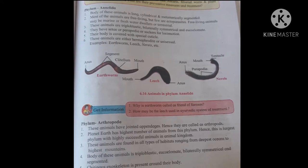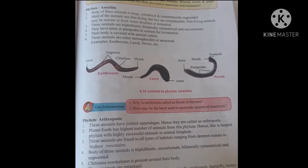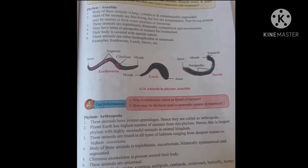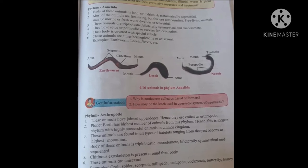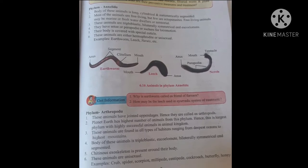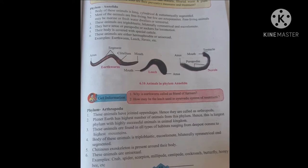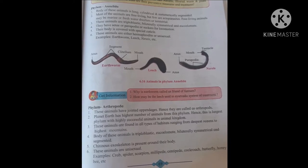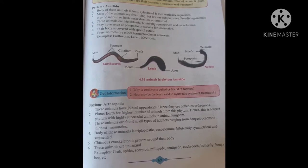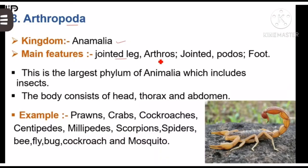Characteristics of Arthropoda. First, these animals have jointed appendages; hence they are called arthropods. Planet Earth has the highest number of animals from this phylum — this is the largest phylum. These animals are found in all types of habitats, ranging from the deepest ocean to the highest mountain.